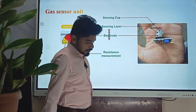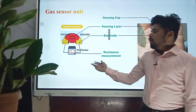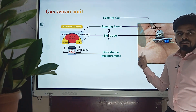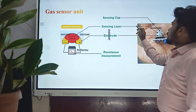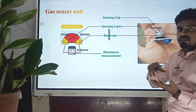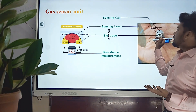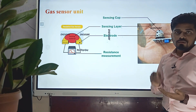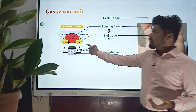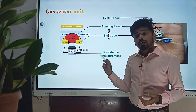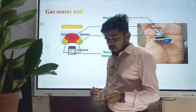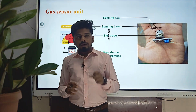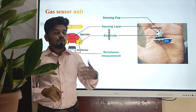Here is the sensing unit — on the left side I have drawn that figure, and on the right side I have purchased that actual sensing unit. There is a sensing cap to protect the inner surface from dust. The sensing layer is what we are going to make in the form of copper oxide thin films. Electrodes are connected and resistance measurement is used to produce the gas sensor signal.